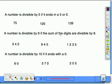Now let me show you the rules for 5, 9, and 10. A number is divisible by 5 if it ends in a 5 or a 0. Pretty simple rule. In the case of 75, it ends in a 5, so it is divisible by 5.